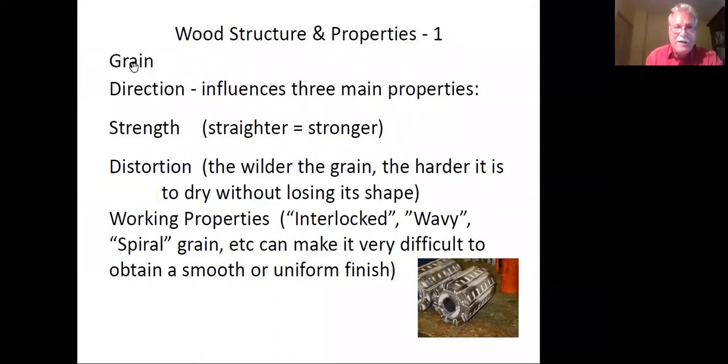Wood structure and properties. The grain, the direction of the wood fibers, influences at least three main properties. It influences the strength - the straighter the grain, the stronger the wood. The wilder the grain, the harder it is to dry without losing its shape. Wavy grain, interlock grain, or spiral grain can make it very difficult to get a smooth finish when machining. But the better the grain and the stronger the wood, the more boring it is to look at.